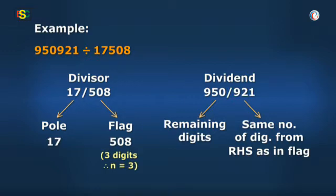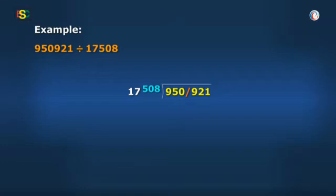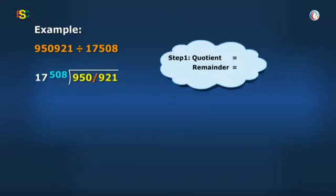Right Vidya, you can now begin the division process. Okay, so step 1, starting division with pole 17 as our new divisor. 17 times 5 is 85 and 10 remains and this ends step 1.